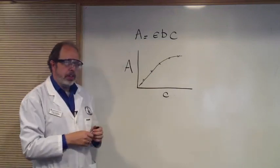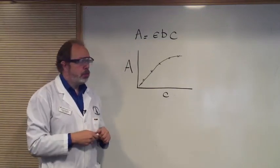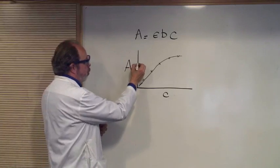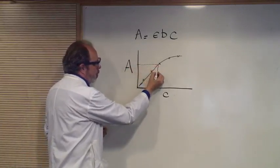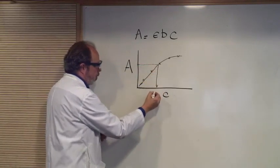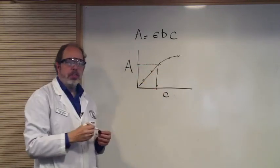Once you have a calibration curve and you've got another solution, if you can measure the absorbance of that, let's say you measured it here, you read the concentration off the calibration curve. And it would be that concentration there.